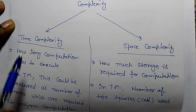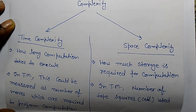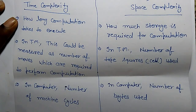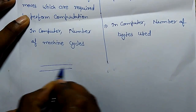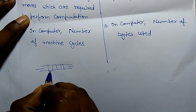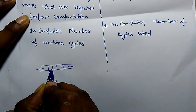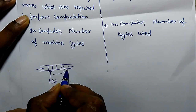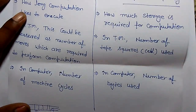In a Turing machine, time complexity is measured as the number of moves required to perform computation. So the total number of moves in a Turing machine is known as time complexity. For example, if there is a tape and the read/write head moves three cells — one, two, three — and then reads something and ends, that is time complexity: number of moves.